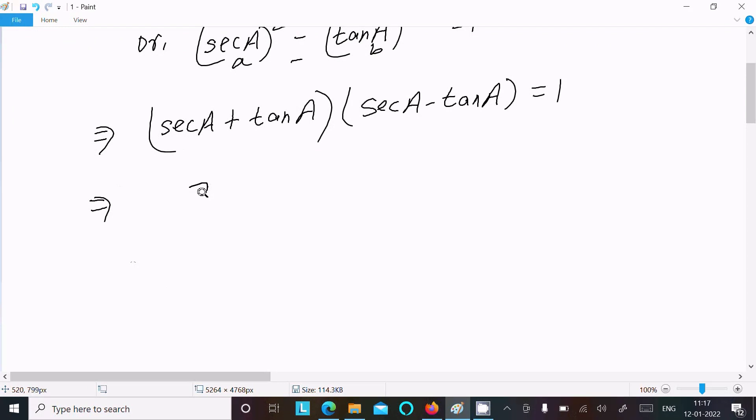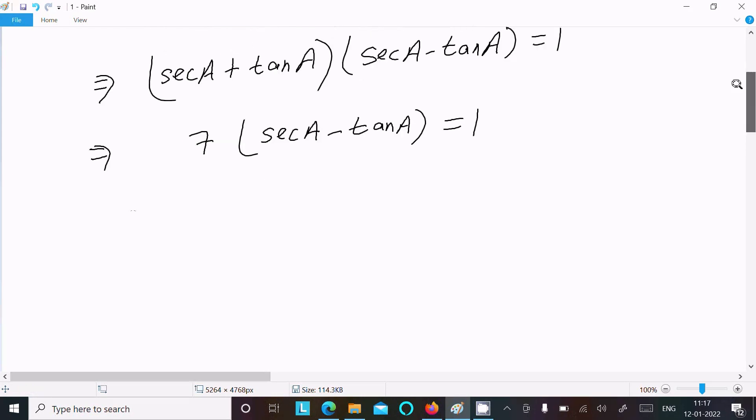So this value is now 7 times secA minus tanA equal to 1. So this is on the multiplication, this will go on the division. So we can write secA minus tanA equal to 1 divided by 7.